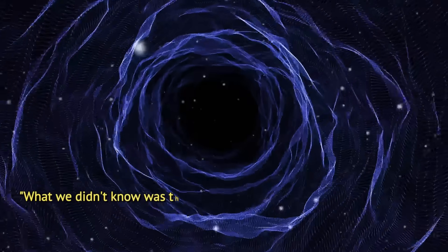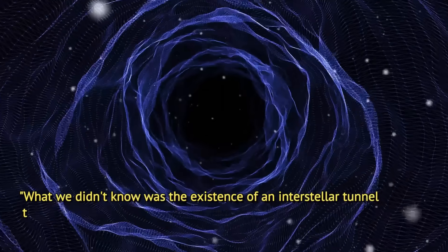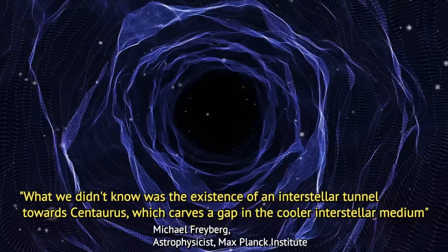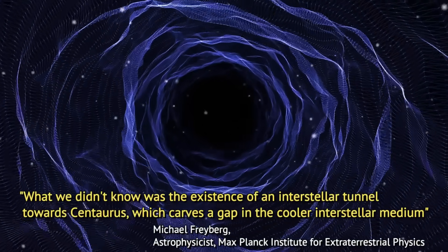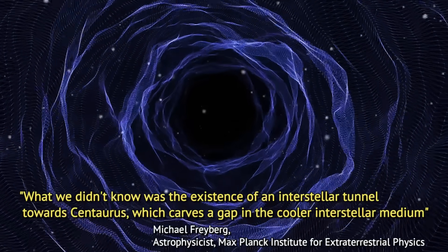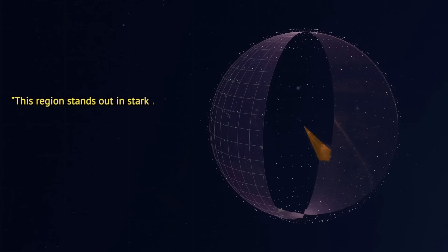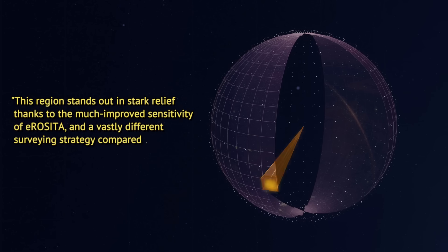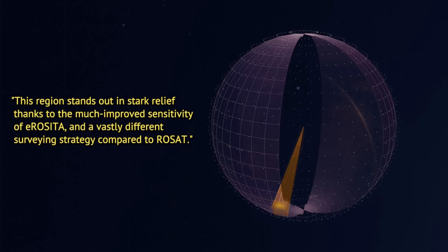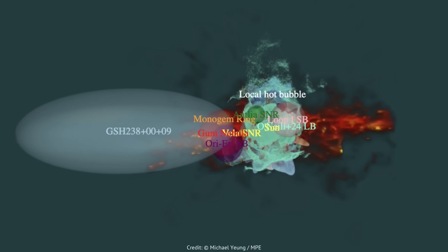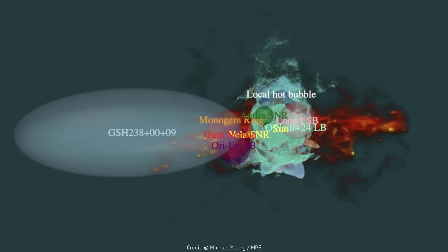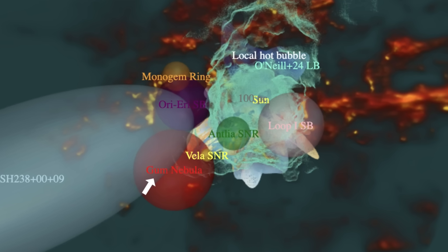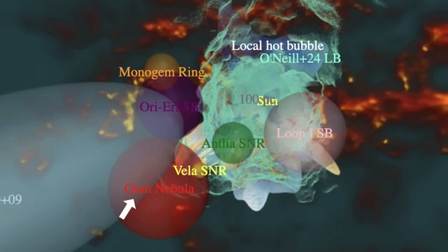What we didn't know was the existence of an interstellar tunnel towards Centaurus, which carves a gap in the cooler interstellar medium, says astrophysicist Michael Freiberg of the Max Planck Institute for Extraterrestrial Physics. This region stands out in stark relief, thanks to the much improved sensitivity of E-Rosita, and a vastly different surveying strategy compared to Rosat. We still don't know exactly what the tunnel leads to, but several intriguing objects lie in its path, such as the Gum Nebula, another neighboring bubble, and several molecular clouds.